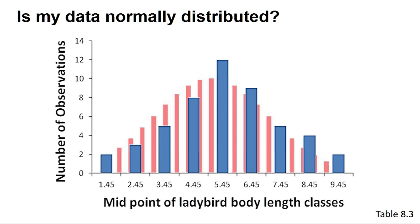However, many programs have several other tests to determine if your distribution could be normal, and in this screencast we will outline the use of the Shapiro-Wilk test, which is the most accurate test for small sample sizes. Again, a significant result indicates that your data is not normally distributed.